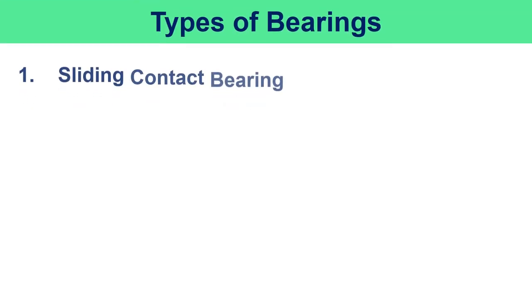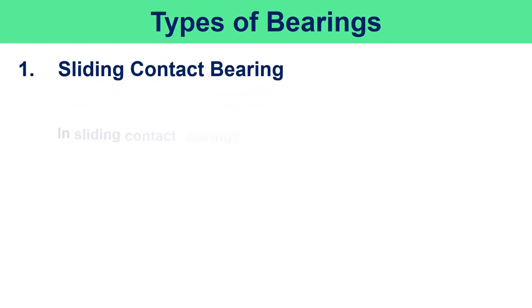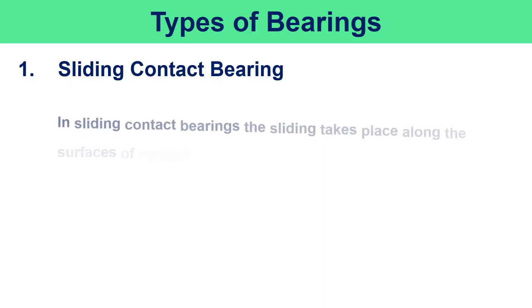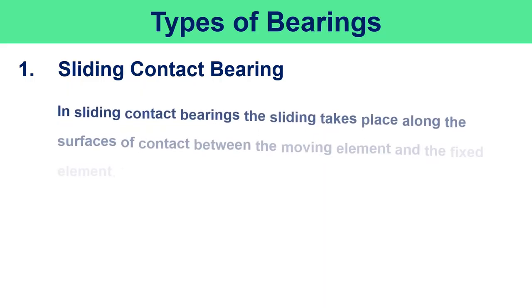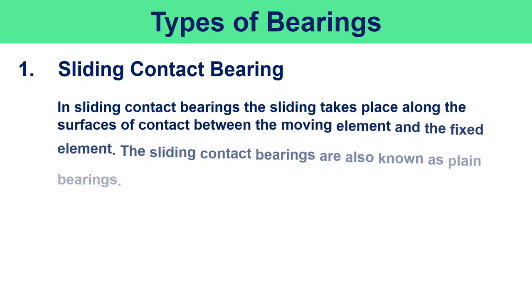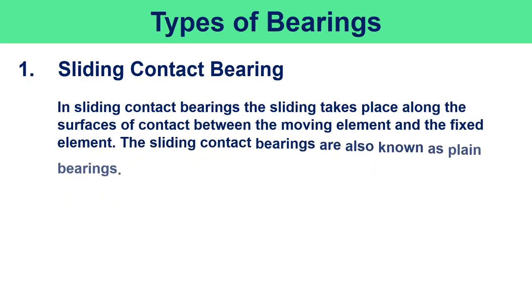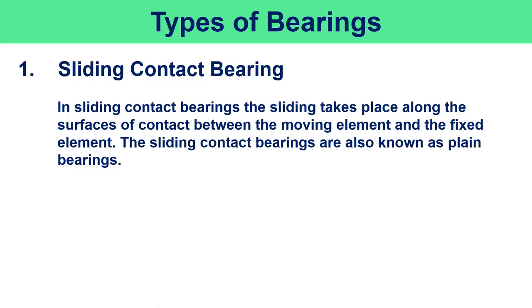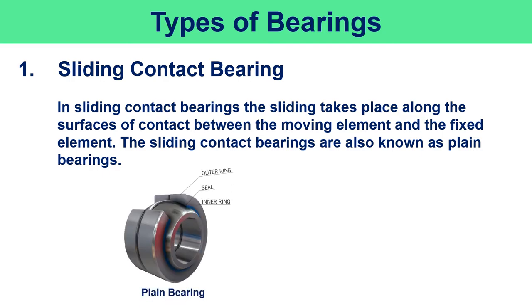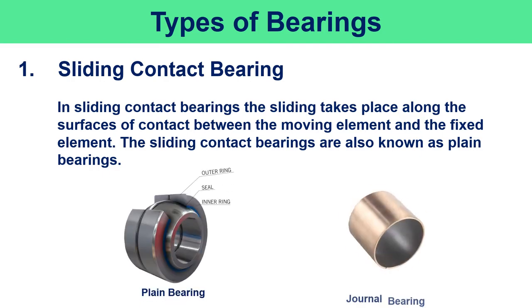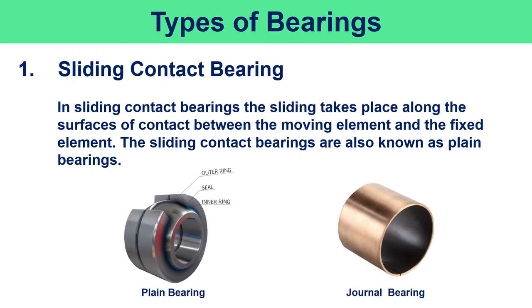In sliding contact bearings, sliding takes place along the surfaces of contact between the moving element and the fixed element. Sliding contact bearings are also known as journal bearings. Plain bearings and journal bearings are examples of sliding contact bearings.